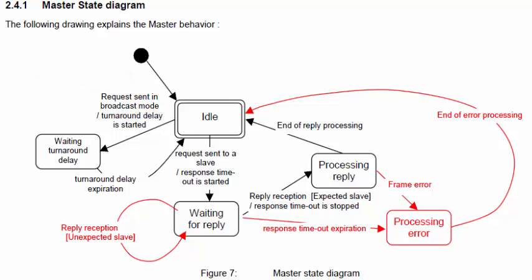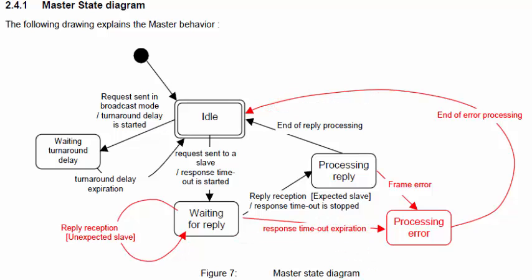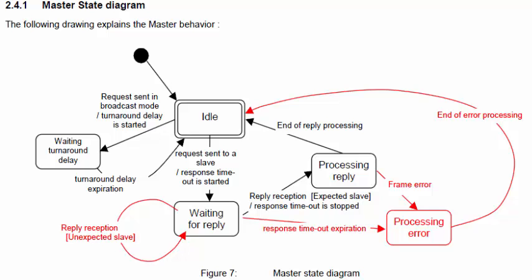If the master is sending a request to a particular slave, it initiates a different timer called the request/reply timeout. The master waits for the addressed slave to respond. If the slave doesn't respond within the reply timeout period, the master initiates an error and goes back to idle. But if the slave responds to the request, the master processes the reply and returns to idle. It's a pretty simple implementation of Modbus.